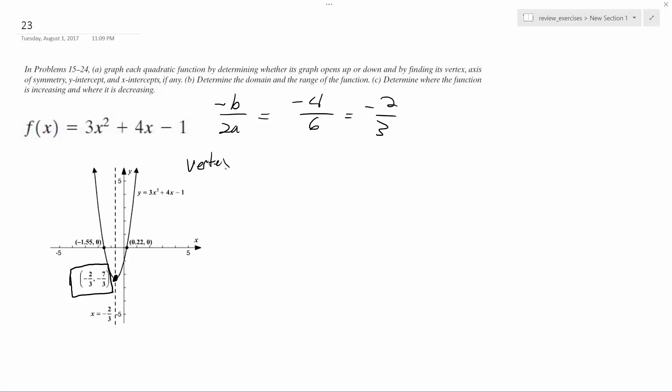So vertex is going to be equal to negative 2 thirds and then negative 7 over 3. All right, so then the x axis of symmetry is just going to be x is equal to negative 2 thirds.